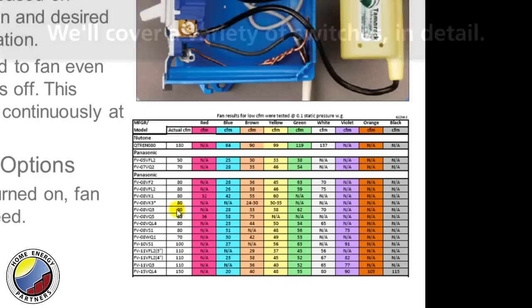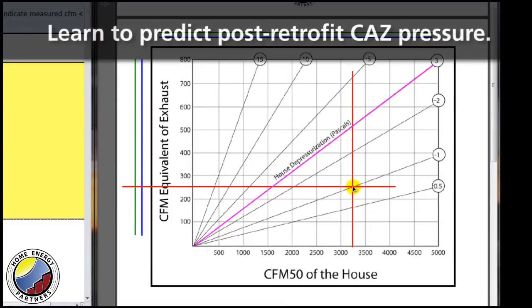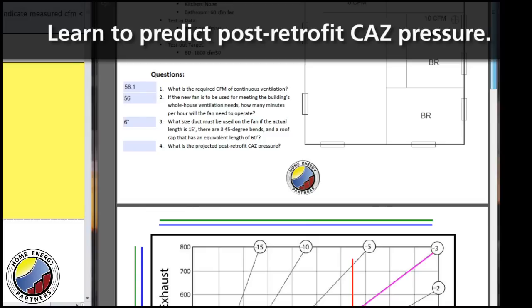I found where those two intersected and I put my horizontal line, and we know that when that test scenario was done that had a CAZ pressure of negative one, I was only exhausting 10 CFM out of the bathroom.